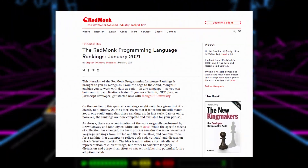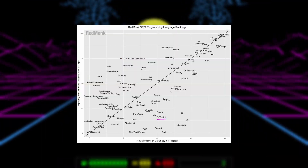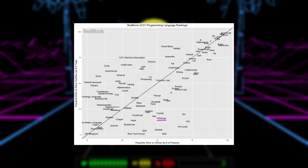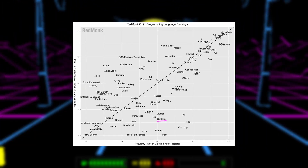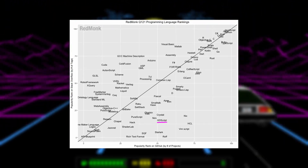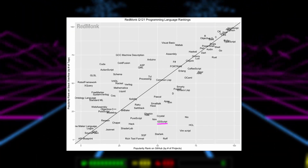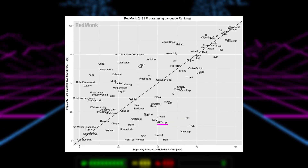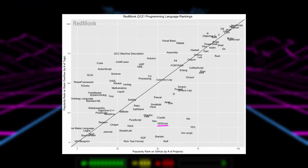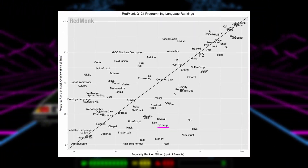The company RedMonk released their first programming language rankings for 2021, and a wild GDScript has appeared. From GitHub, they pull the base repository language of every project and plot that ranking to the y-axis, and from Stack Overflow, they count the number of tags from questions and plot that to the x-axis. As you can see, GDScript has a good amount of projects on GitHub, but very few questions on Stack Overflow. This is probably because Godot has developed its own communities outside of Stack Overflow, and most beginner questions appear on places like the Godot forums or the Godot subreddit.